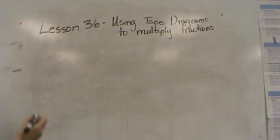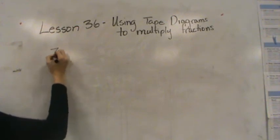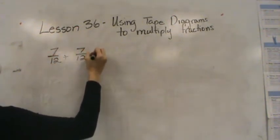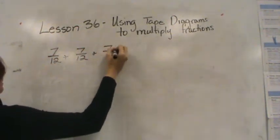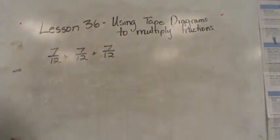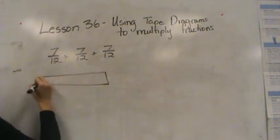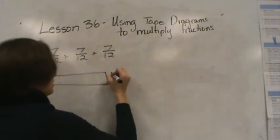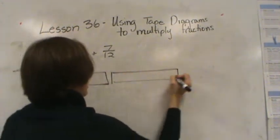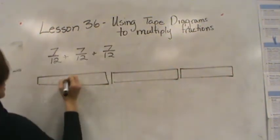Let's try another one. Let's do 7/12 plus 7/12 plus 7/12. Let's start with our tape diagrams. So I'm going to have to make 3 of the 7/12.